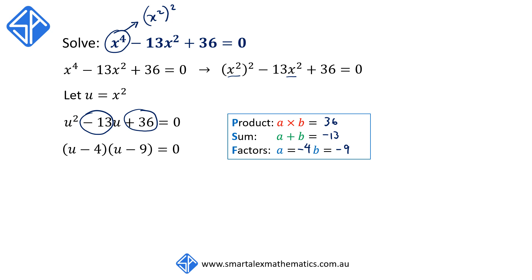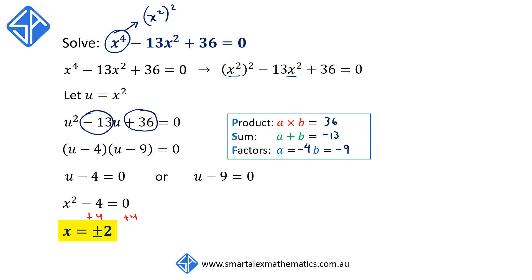To solve this quadratic, we use the null factor law. For the two factors to multiply to give 0, we either have u minus 4 equals 0 or u minus 9 equals 0. If u minus 4 equals 0, we substitute u equals x squared to get x squared minus 4 equals 0, and solving gives x equals plus or minus 2. If u minus 9 equals 0, then x squared minus 9 equals 0, so x squared equals 9, and taking the square root gives x equals plus or minus 3. So we have four solutions: x equals plus or minus 2 or plus or minus 3.